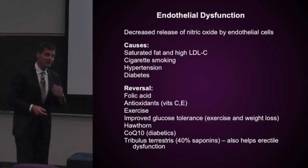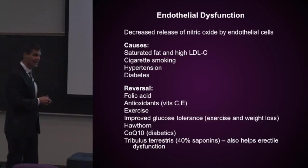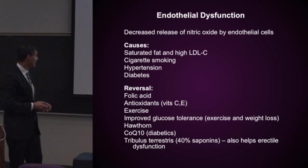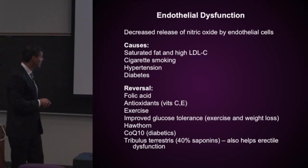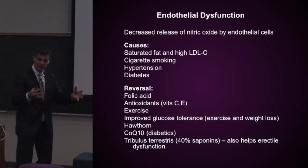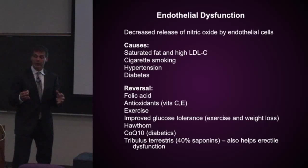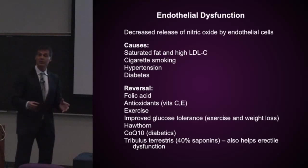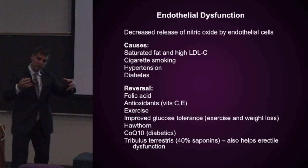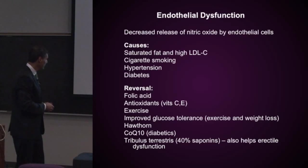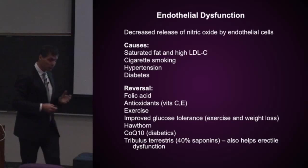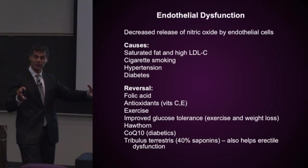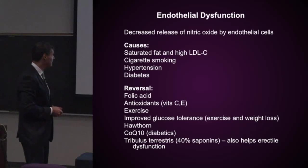Things that have been shown to reverse endothelial dysfunction include folic acid, antioxidant supplements like vitamin C and vitamin E at significant dosages, aerobic exercise, and improving glucose tolerance through exercise and weight loss — all of which improve nitric oxide release and lead to better endothelial function. The herb hawthorn increases nitric oxide release, dilating blood vessels, lowering blood pressure, and improving blood flow. Coenzyme Q10 in diabetics has been shown to lower blood pressure and improve endothelial function by upregulating this vasodilation effect. There's also an herb called tribulus terrestris, which has been shown to do this and is often used to help improve erectile dysfunction because it seems to particularly affect blood vessels in the genitalia.